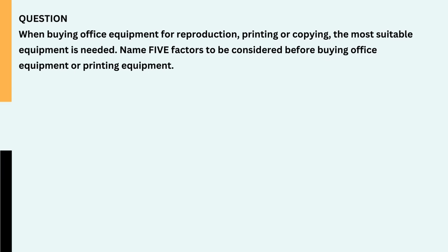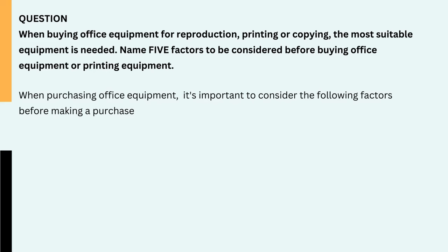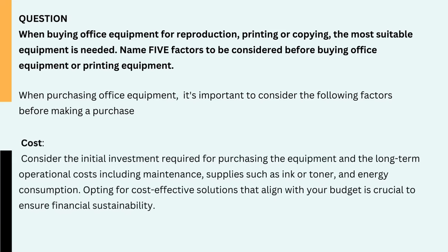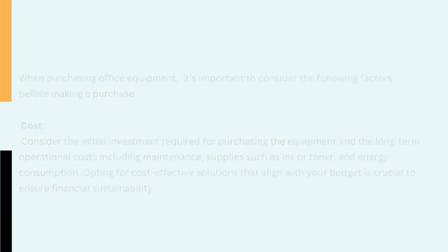Question: When buying office equipment for reproduction, printing or copying, the most suitable equipment is needed. Name five factors to be considered before buying office equipment or printing equipment. When purchasing office equipment, it's important to consider the following factors before making a purchase. 1. Cost. Consider the initial investment required for purchasing the equipment and the long-term operational costs including maintenance, supplies such as ink or toner and energy consumption. Opting for cost-effective solutions that align with your budget is crucial to ensure financial sustainability.